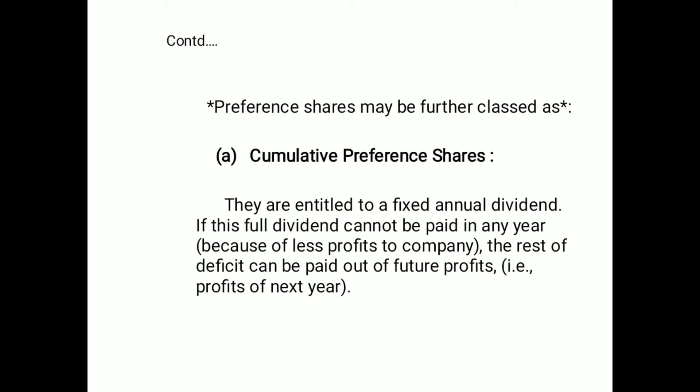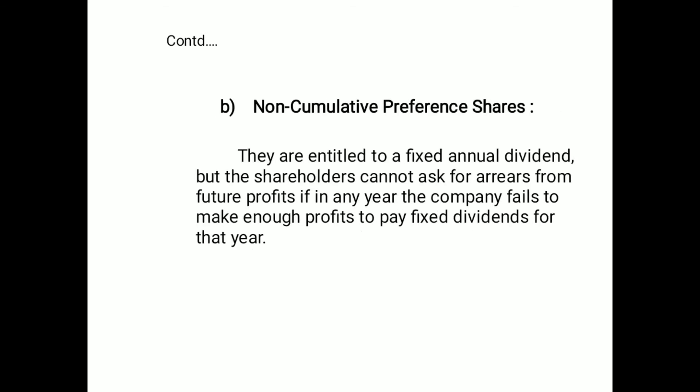The first type is cumulative preference shares. They are entitled to a fixed annual dividend. If the full dividend could not be paid in any year because of insufficient profits, the remaining deficit can be paid out of future profits, that is, the profit of the next year.